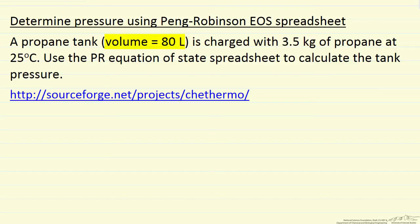In this problem, we're given the size of a propane tank and we're going to charge it with 3.5 kilograms of propane at 25 degrees C. We want to use the Peng-Robinson equation of state to model the propane at these conditions and calculate the pressure in the tank.